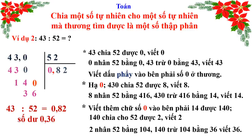Ở phép tính này, các em lưu ý cách ghi số dư. Trong phép chia số thập phân, số dư cũng là số thập phân. Chữ số 3 thuộc hàng phần mười, chữ số 6 thuộc hàng phần trăm, nên số dư là 0,36. Qua ví dụ số 2, các em đã biết cách chia một số tự nhiên cho một số tự nhiên đối với trường hợp số bị chia bé hơn số chia.